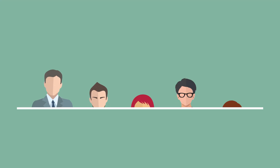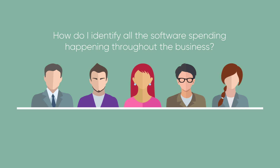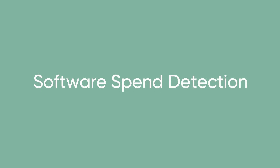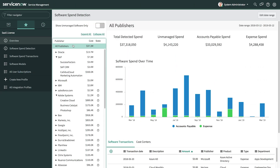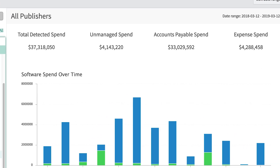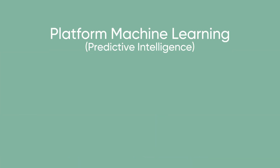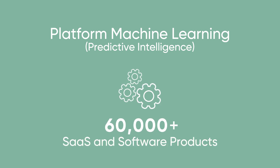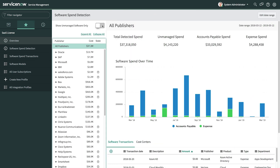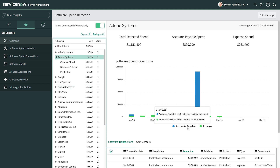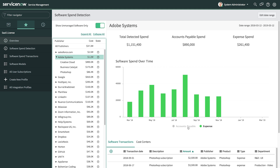One of the most difficult mandates SAM managers face is taking inventory of all the SaaS and software applications being used in the business. That's why we're excited to introduce the software spend detection feature. Our software spend detection feature sheds light on a wide range of software spending happening throughout the business. First, we analyze data from a variety of financial systems like expense systems and general ledgers. Then, we leverage platform machine learning with our normalization engine to analyze transactions against a growing database of more than 60,000 SaaS and software products. We often uncover thousands of software purchases happening all over the business, and SAM managers can easily see the unmanaged software lingering in their business beyond the oversight of the SAM team.